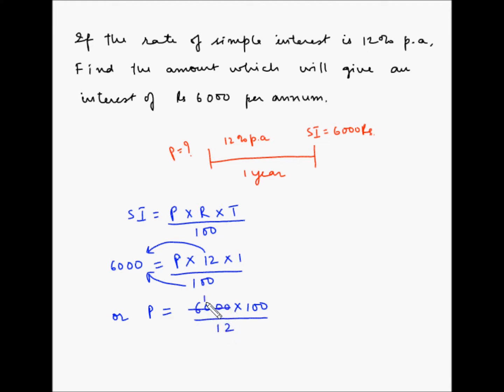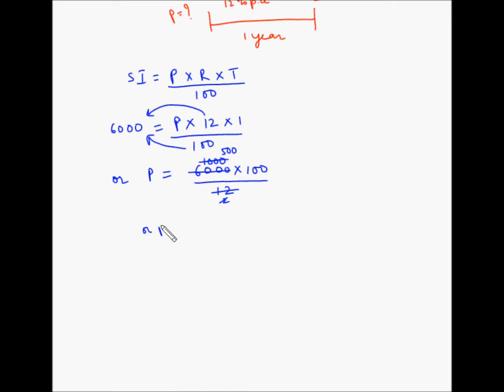So this is 1000 and this is 2, and then 2500. So P is equal to 500 and then these two zeros, so 50,000 rupees.